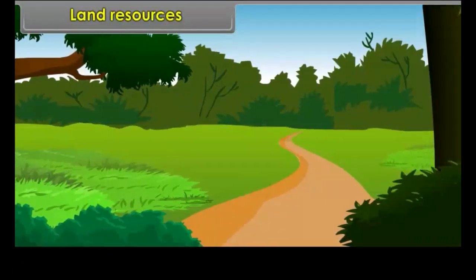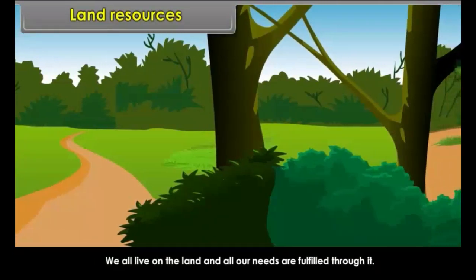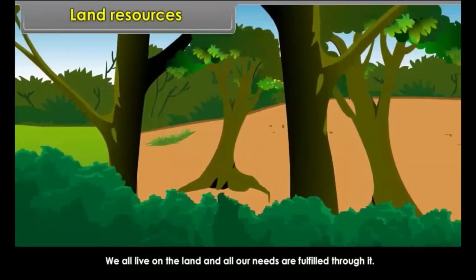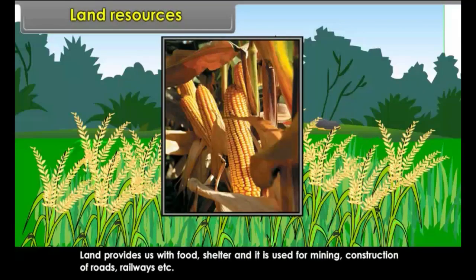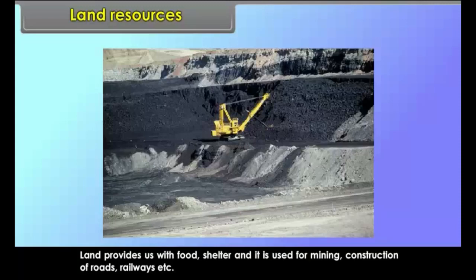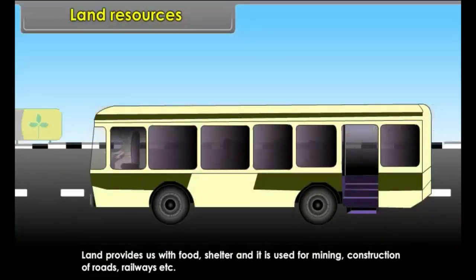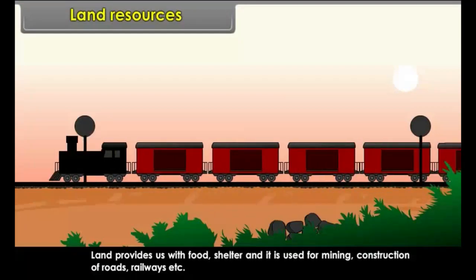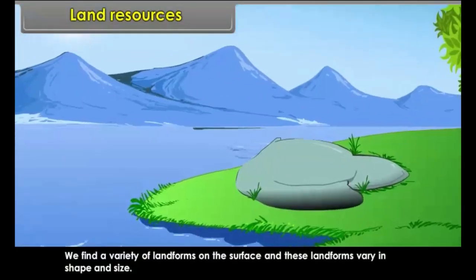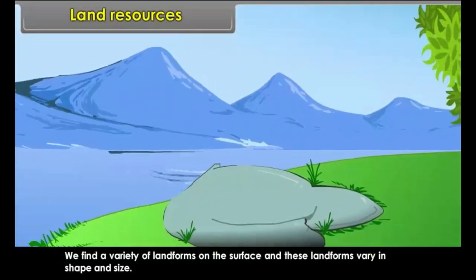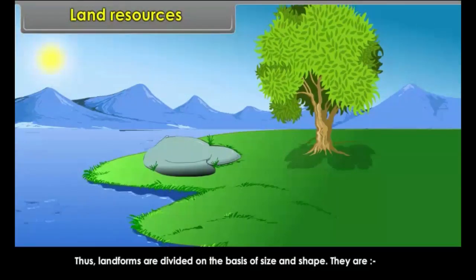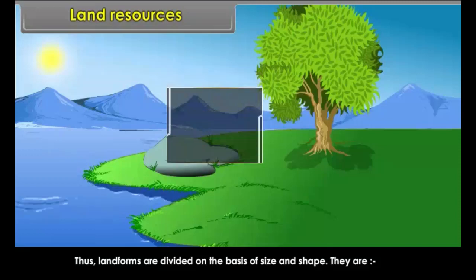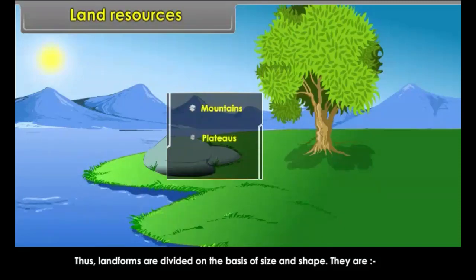Land resources. We all live on the land and all our needs are fulfilled through it. Land provides us with food, shelter, and it is used for mining, construction of roads, railways, etc. We find a variety of landforms on the surface that vary in shape and size. Landforms are divided on the basis of size and shape — they are mountains, plateaus, and plains.